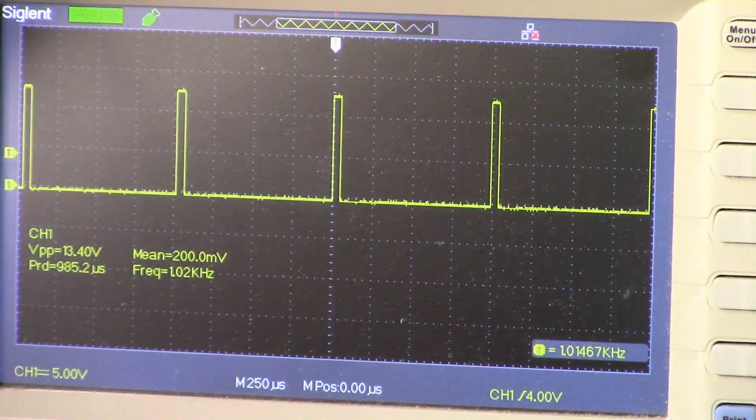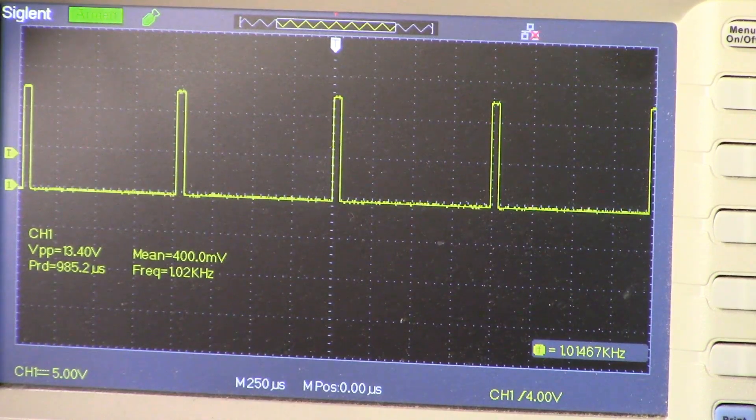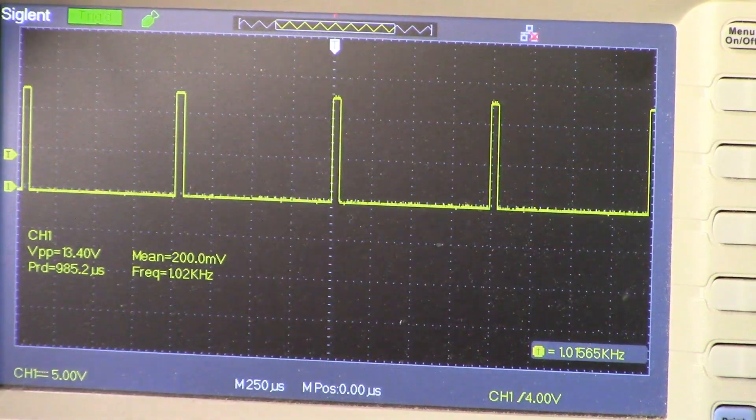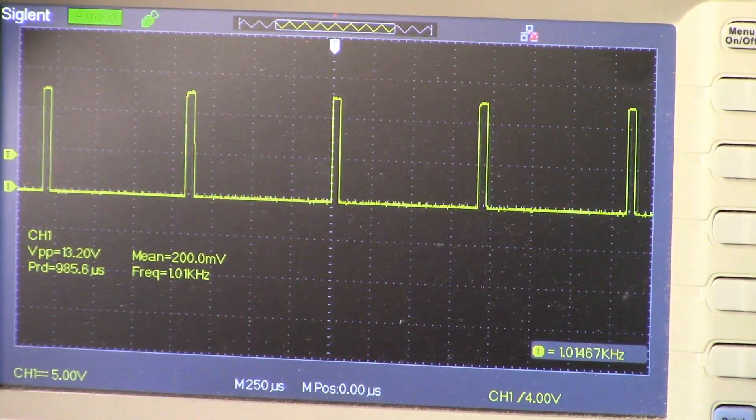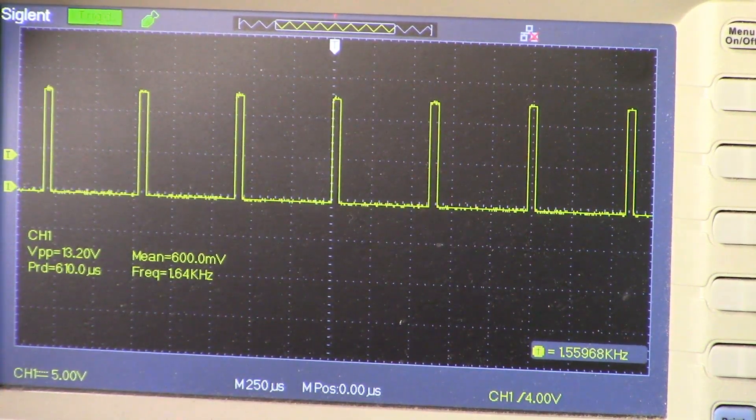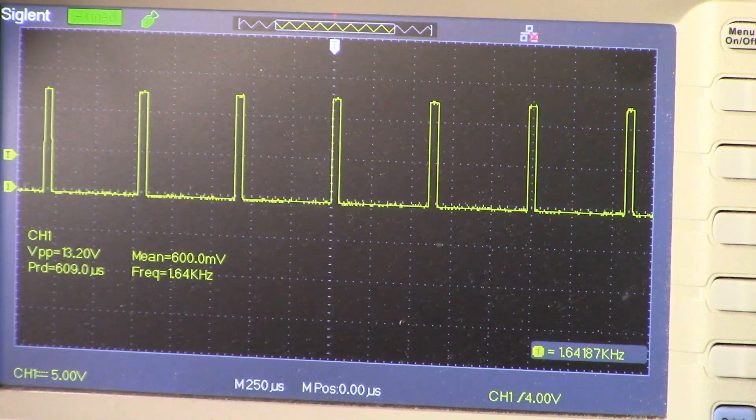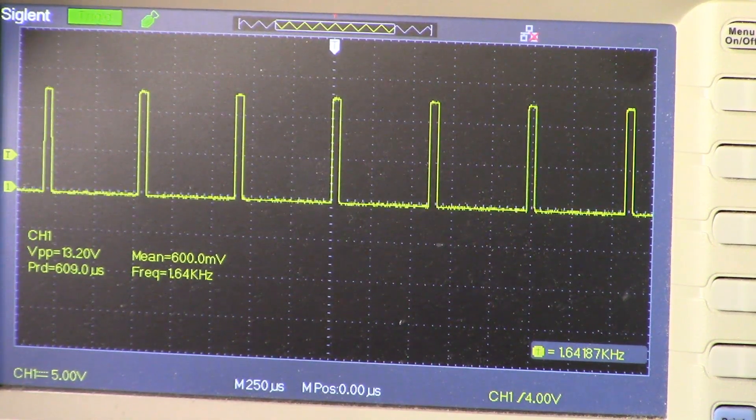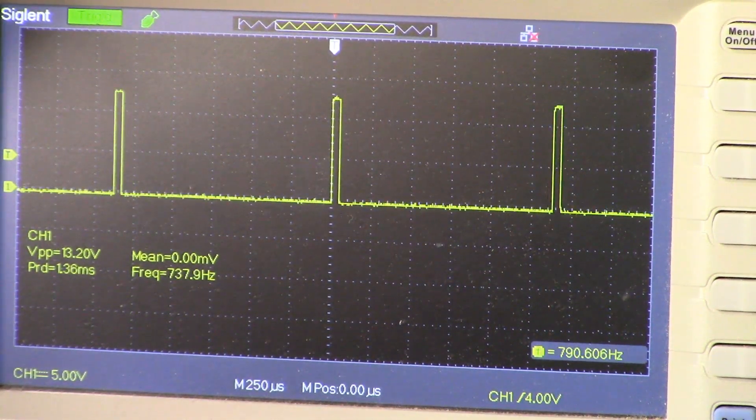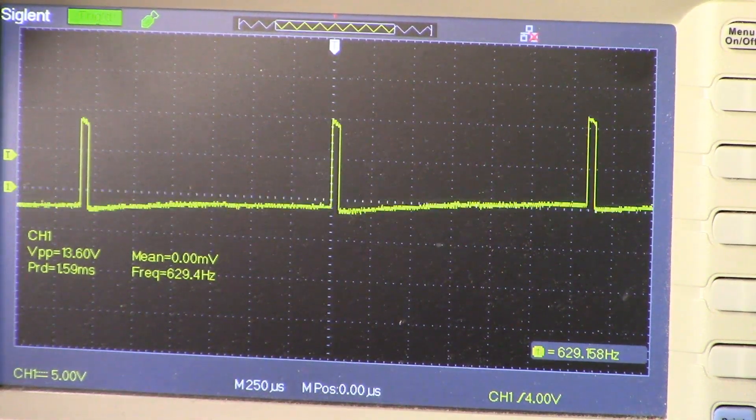All right guys, as promised, here's the shot of the oscilloscope showing the transmit pulse generator. So you can see the pulse as it is and if you manipulate pot number one, you can see in the lower right hand corner of the scope the frequency increasing. We're at 1.64 kHz and if I turn it the opposite direction we get down to 630.